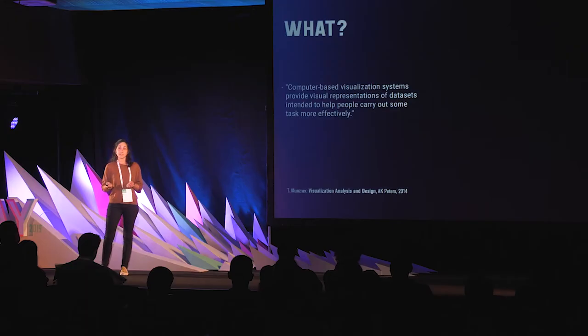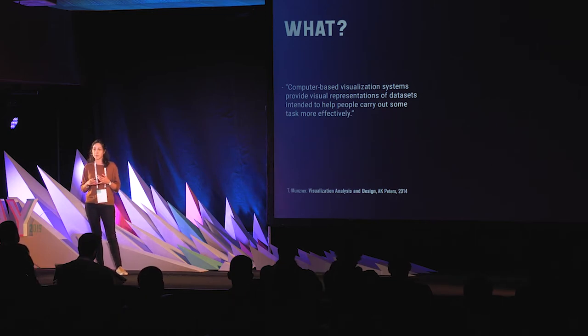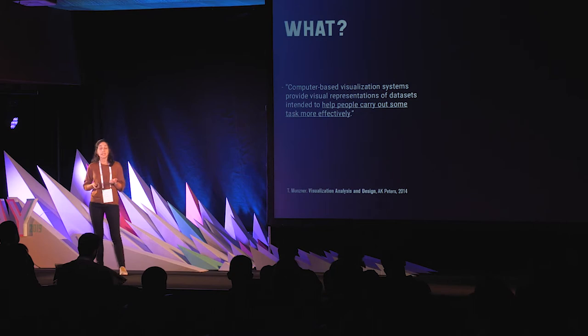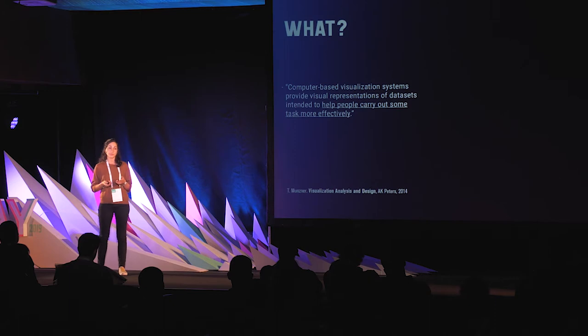Let's start with the easy questions. What is information visualization? Basically, visualization is the visual output of data. Its main aim is to simplify, structure, and represent data visually. At a higher level, we can also say that its main aim is to enable us to do our tasks in a more efficient way.